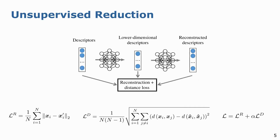The first method we propose is unsupervised reduction. The encoder projects the input feature into lower-dimensional embeddings, while the decoder reconstructs the original input from the lower-dimensional embeddings. We apply consistency constraints by minimizing the reconstruction loss between inputs and outputs. We also propose an additional distance loss which calculates the difference between the distance of the original high-dimensional descriptors and the distance of the lower-dimensional descriptors in the embedding space.